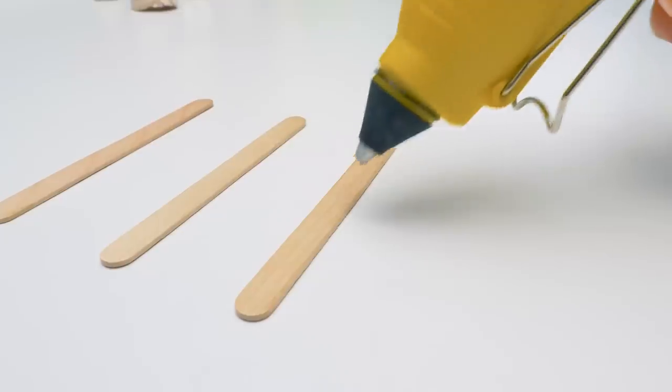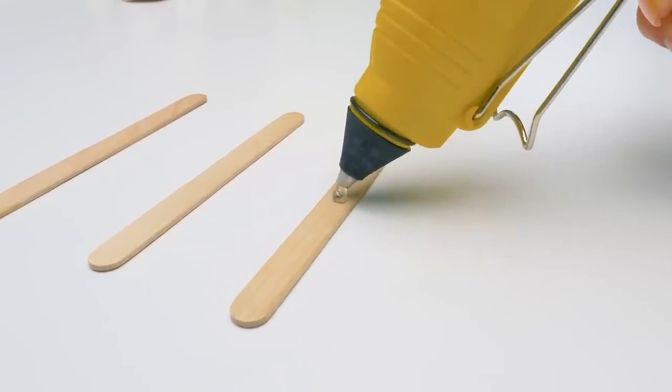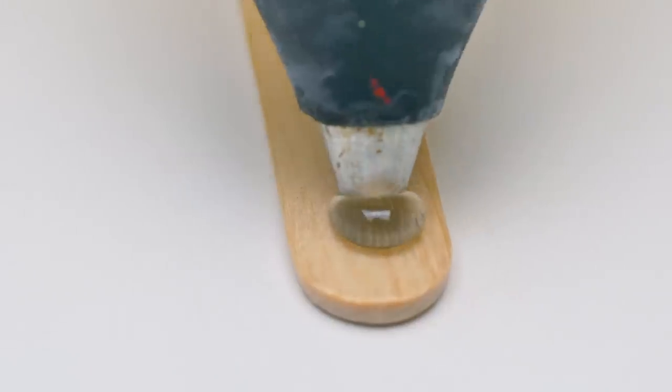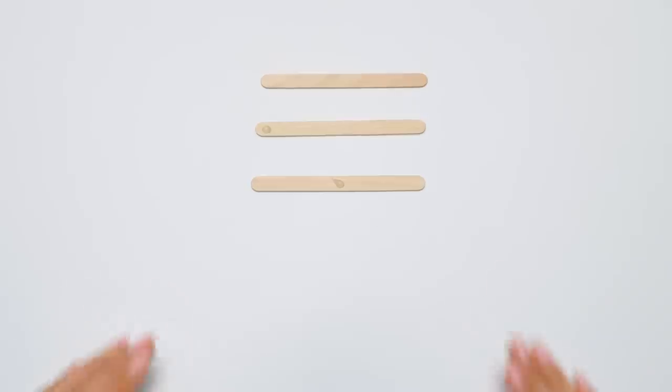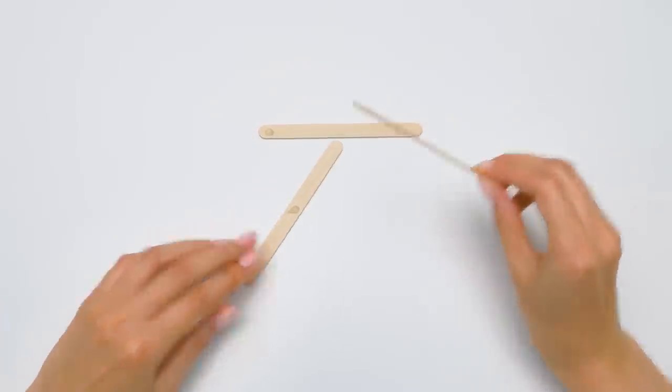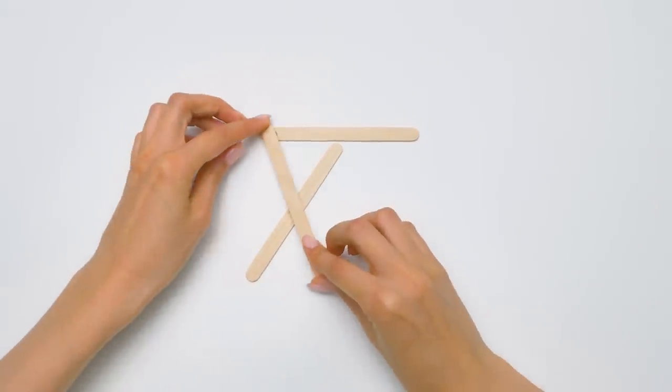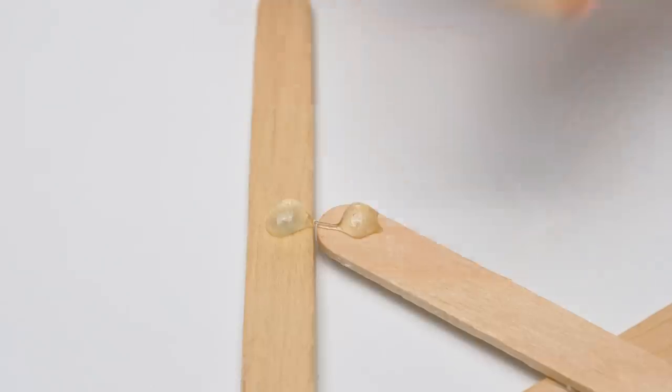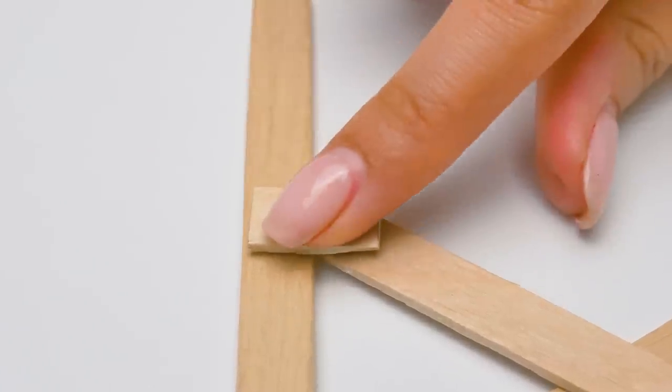So, we have these popsicle sticks. Add a drop of glue here, not too much. And another drop here, so that the pieces will connect well. Now, let's take the third stick and... Pop! Apply some glue here, in the middle. Be careful with hot glue. And now, place a piece of stick there.